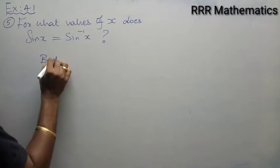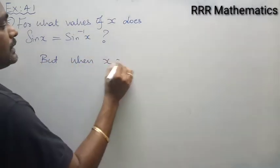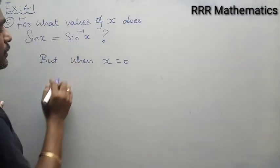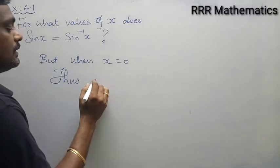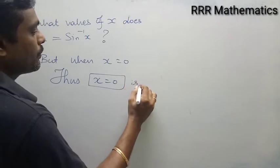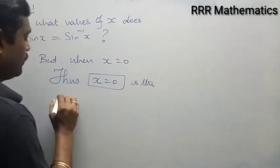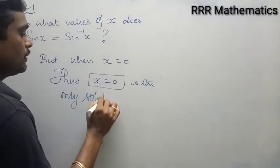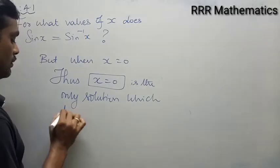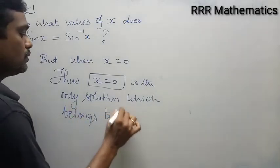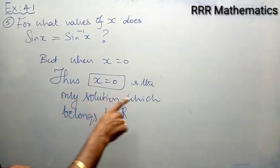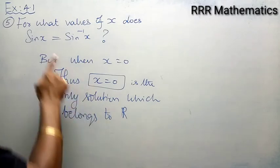When x is 0, sin 0 will be 0, and sin inverse 0 will be 0. So in this case, x equal to 0 is the only solution which belongs to the real numbers. It satisfies. Is it clear?